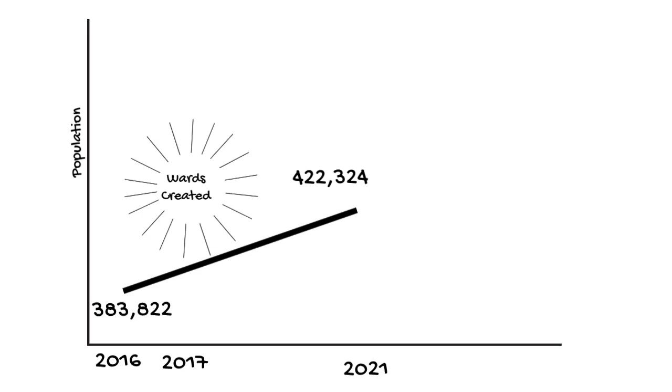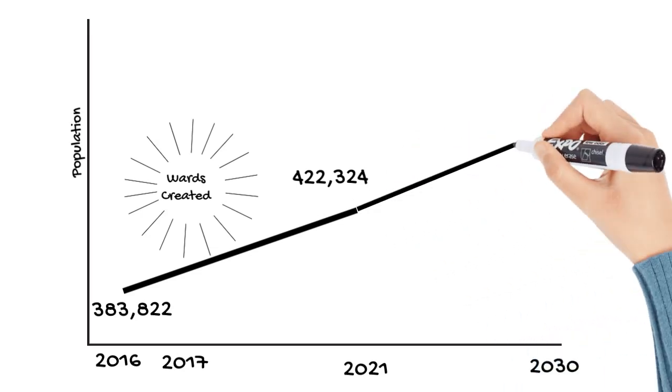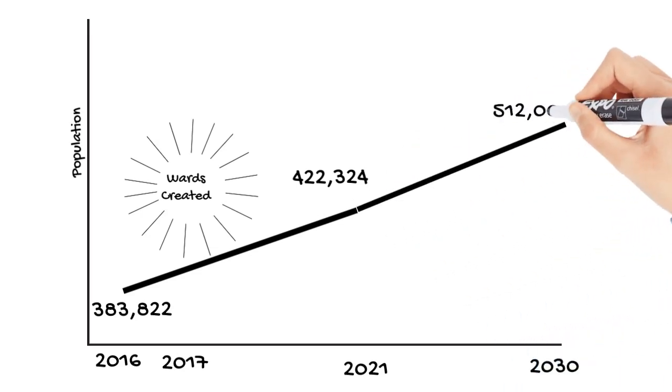Since 2016, London's population growth has been one of the fastest in Ontario, growing by 10% over that time. The population is expected to grow to over 512,000 by 2030.